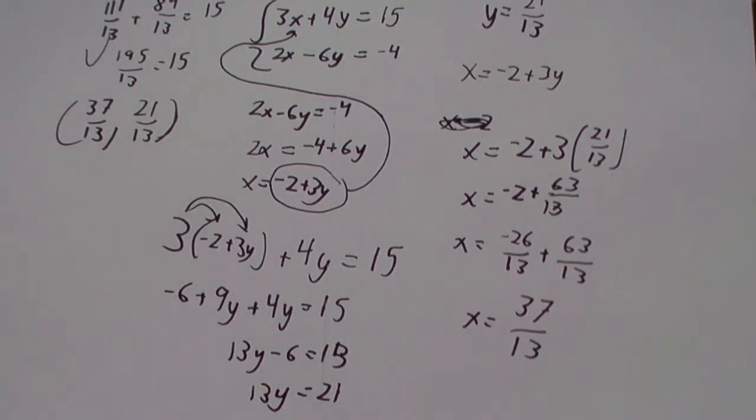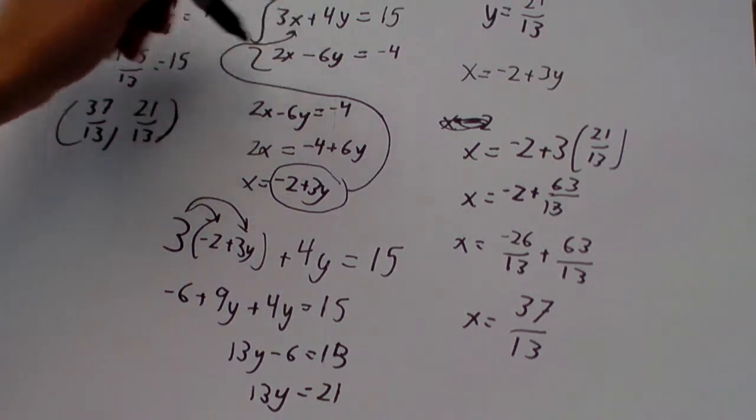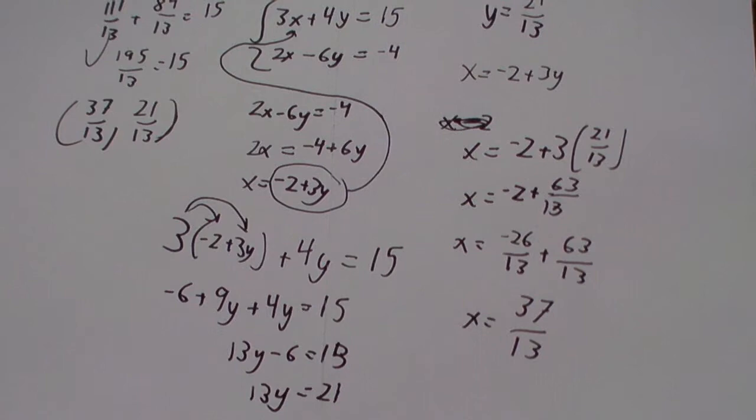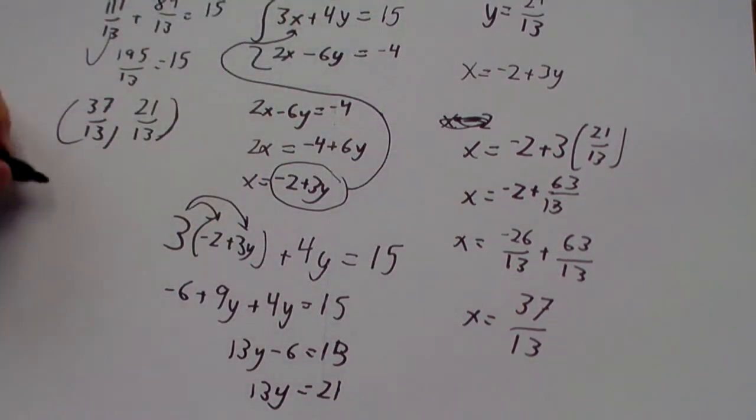If we want to be extra cautious, we can check the other equation, too. It's usually good to check both equations, because sometimes, if you mess up, you'll mess it up in a way that makes one of the equations true, but the other one false.